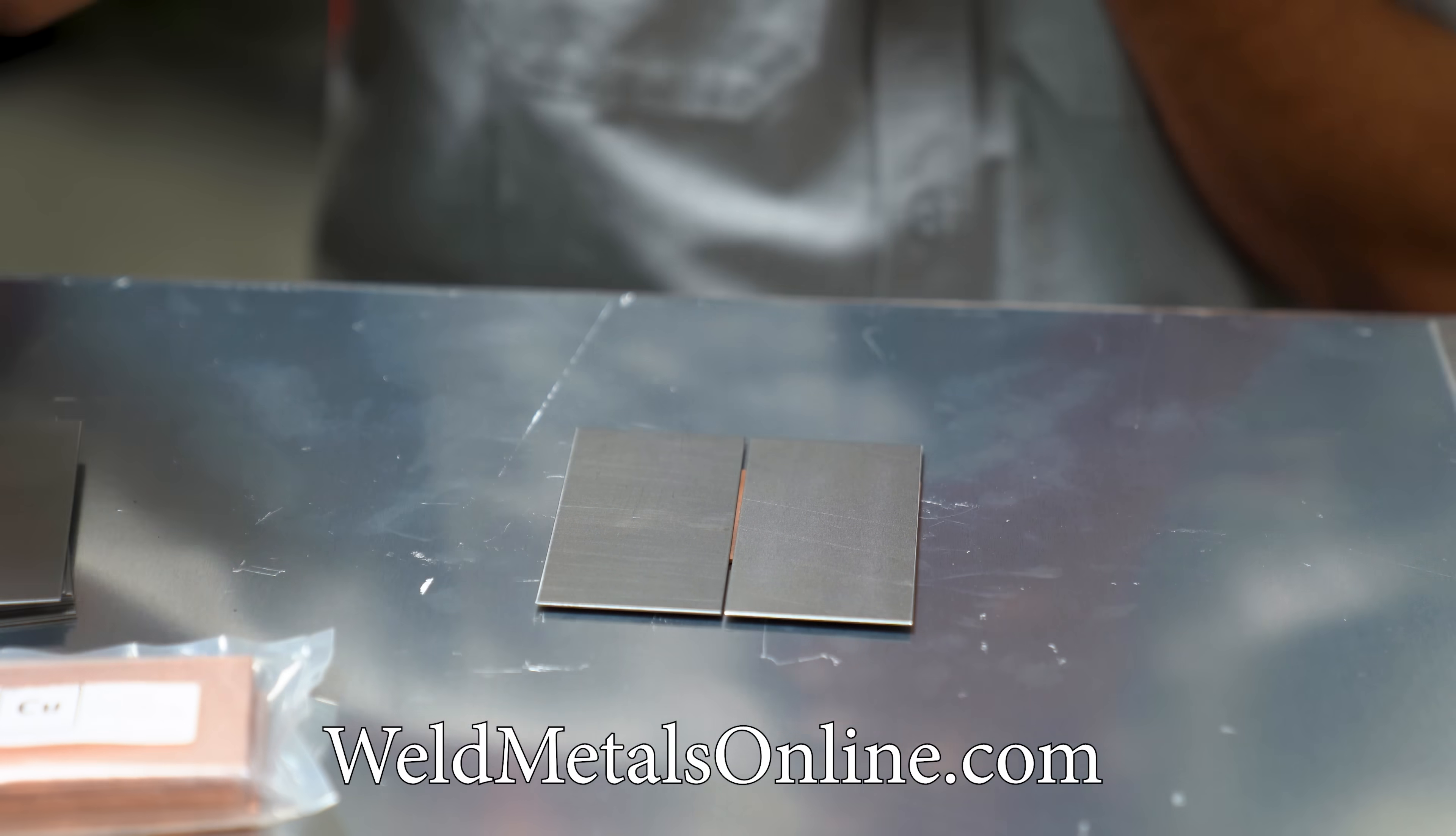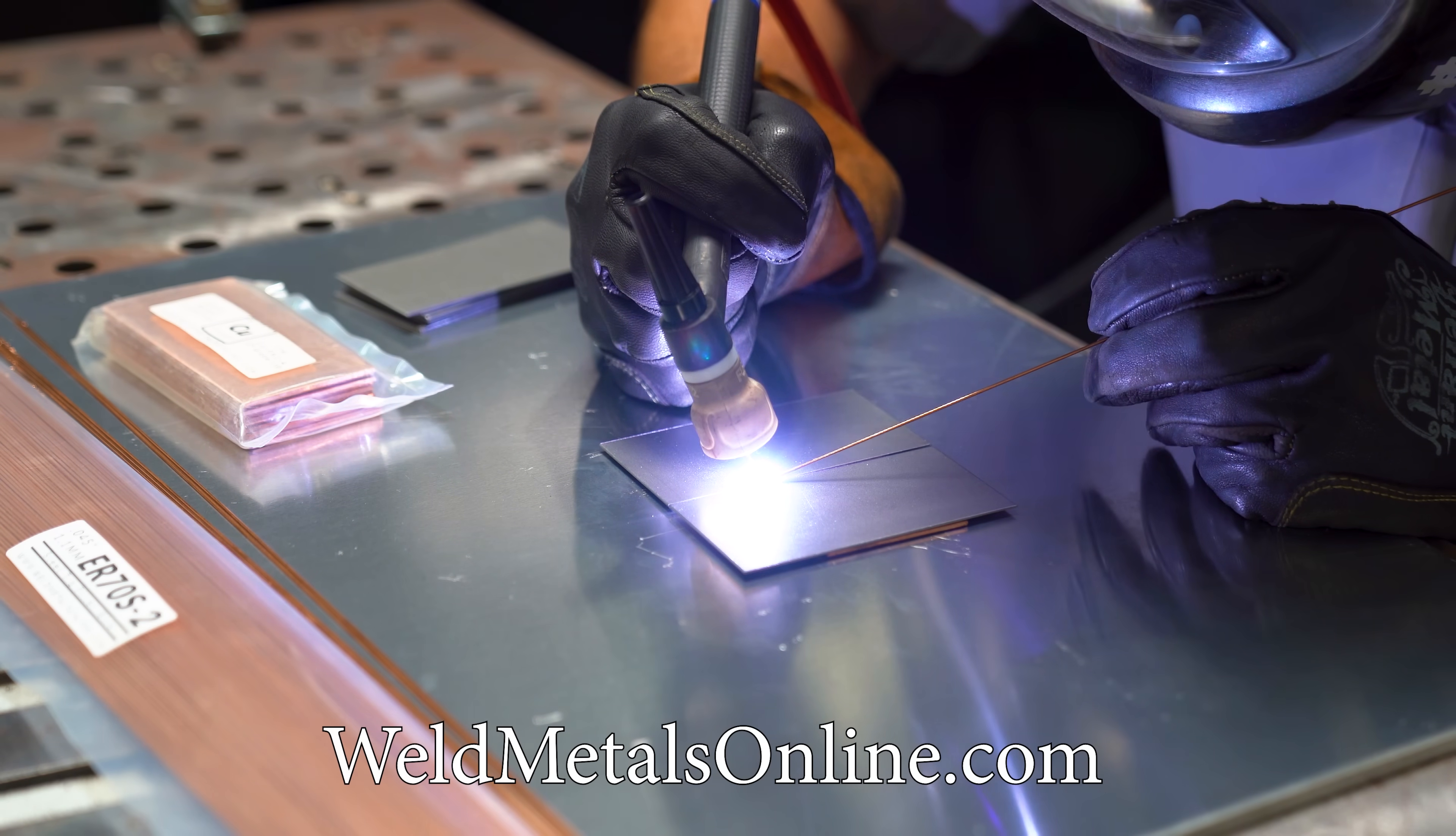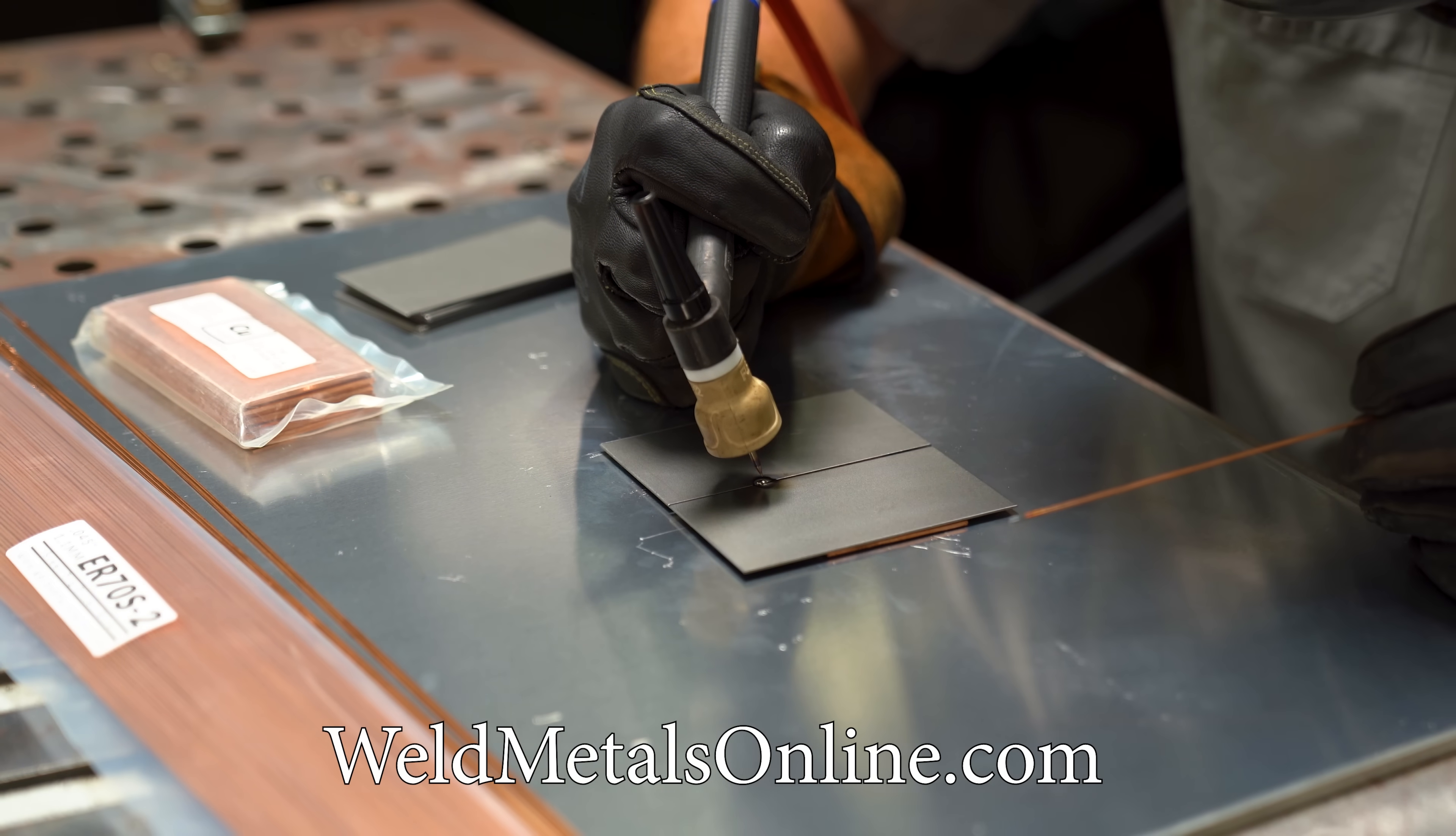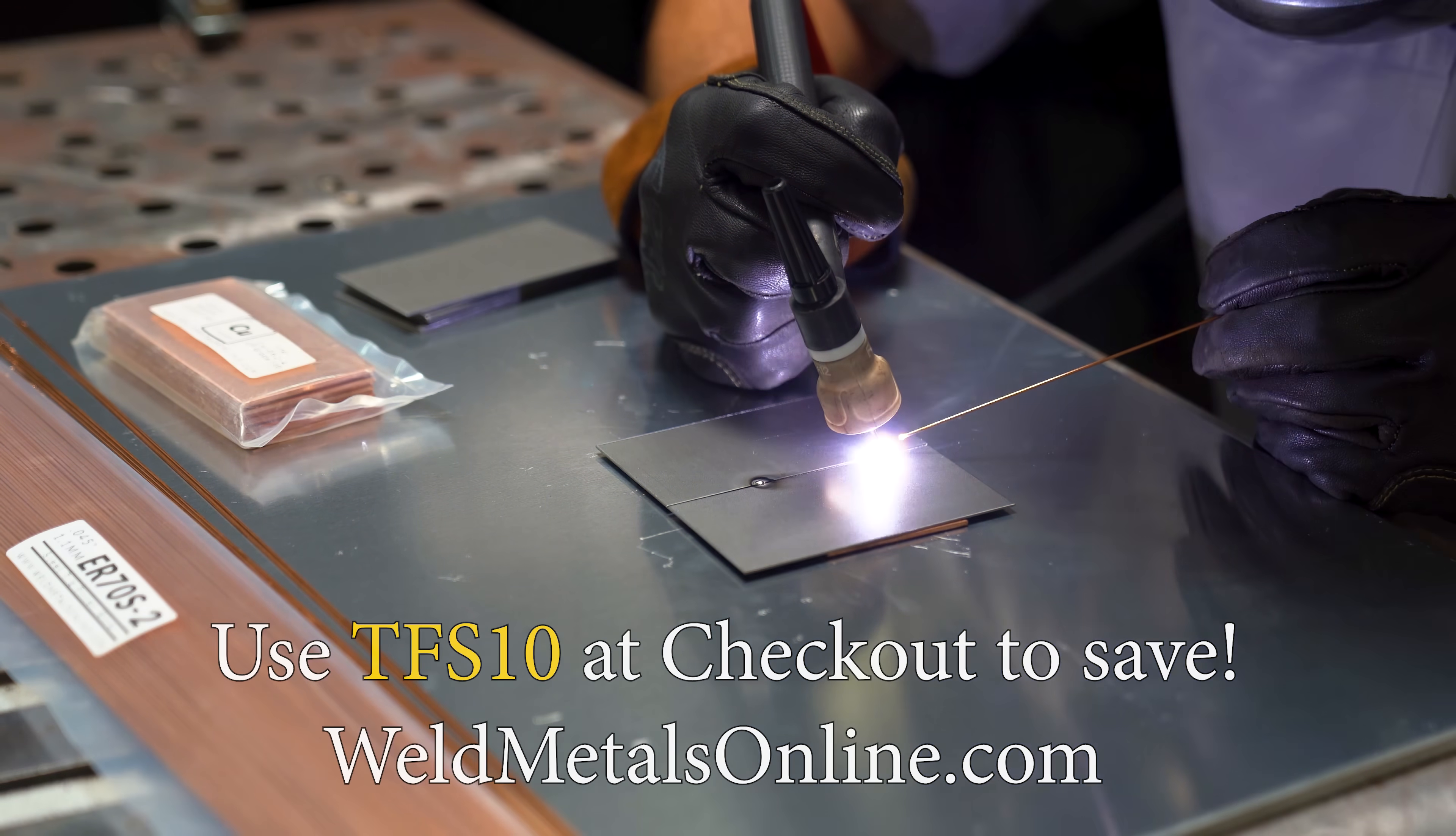My filler is ER70S-2 in 045 diameter, and I'm using a FUPA 12 cup set to about 30 CFH. The Prime Weld TIG 225 is set to 55 amps on the pedal, and I'm using 3/32 inch laser tungsten because it welds every metal on any machine ever made, and it's extremely precise at low amp welding. Now if you would like to save on your next order at weldmetalsonline.com, use my code TFS10 at checkout.